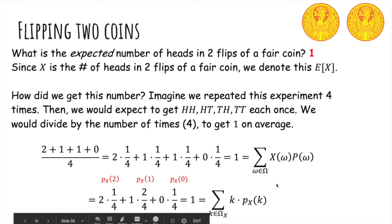So this is another way to compute expectation. And that's just the sum over all values in the range of X. So each value K, and we take K multiplied by its probability. So it's actually the same formula as this, except we grouped these outcomes together.